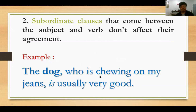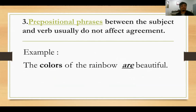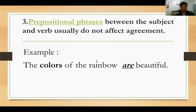Number three: prepositional phrases between the subject and verb usually do not affect agreement. Contoh: 'The colors of the rainbow are...' Yang kita lihat adalah the colors — plural — bukan rainbow. Karena colors itu plural, maka to be-nya juga harus menyesuaikan: are.